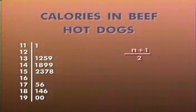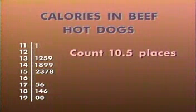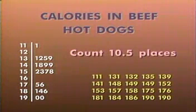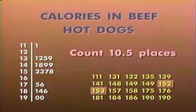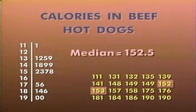Now let's describe the distribution numerically. We'll use the median to tell us the calorie content of a typical beef hot dog. Since we have 20 brands, the location of the median is 20 plus 1 divided by 2, which equals 10.5. That's halfway between the 10th and 11th hot dog in the ordered list. The stem plot already arranges the data in order — that's an advantage of stem plots. The 10th and 11th values are 152 and 153, so the median is the average of these values, or 152.5 calories.